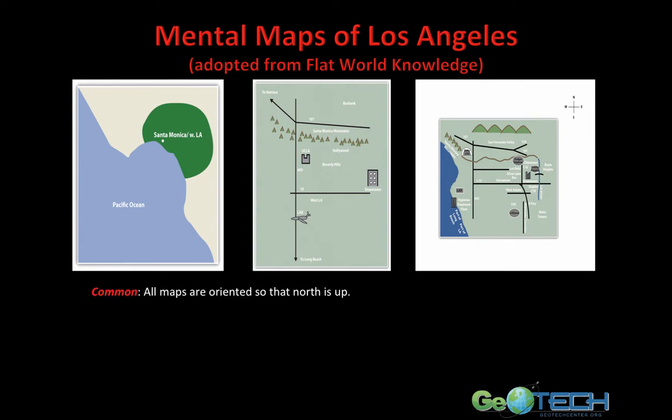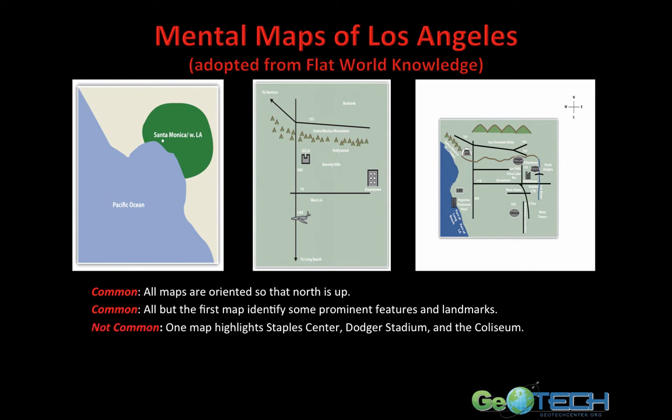All maps are oriented so that north is up. Also in common, all but the first map identifies some prominent feature or landmark, because geographically speaking, that's how we tend to think — wherever there's a geographic landmark or prominent feature, we tend to remember it. What's not common is that one map highlights Staples Center, Dodger Stadium, and the Coliseum — basically, we're moving from complexity to more complexity.